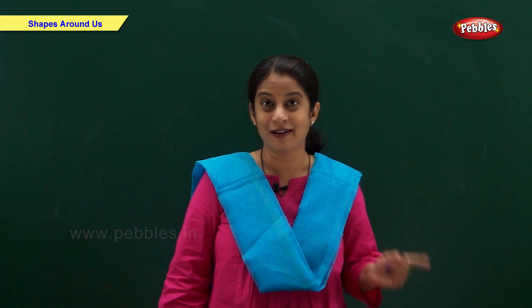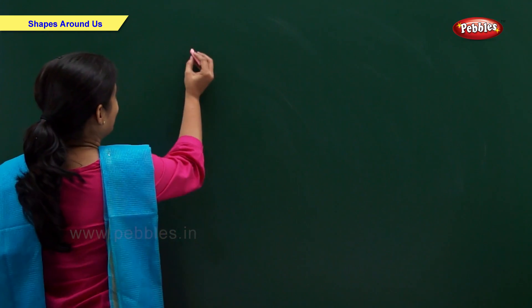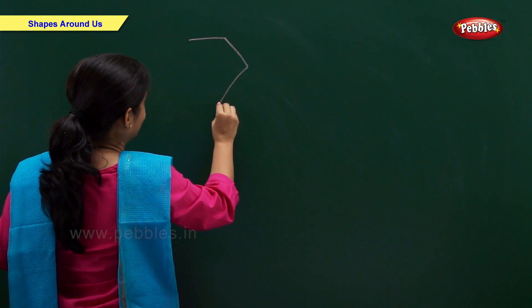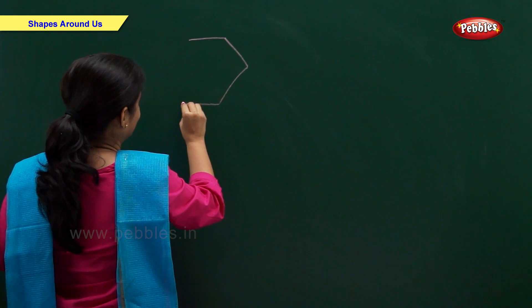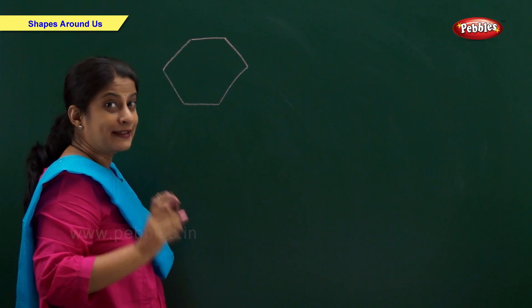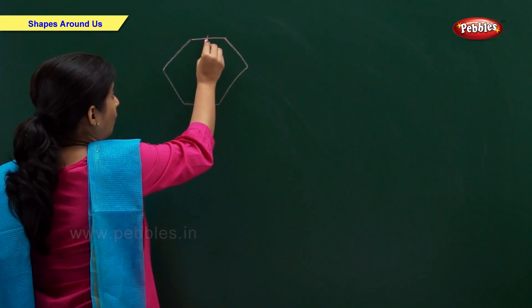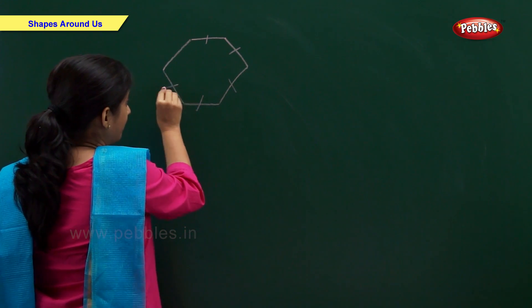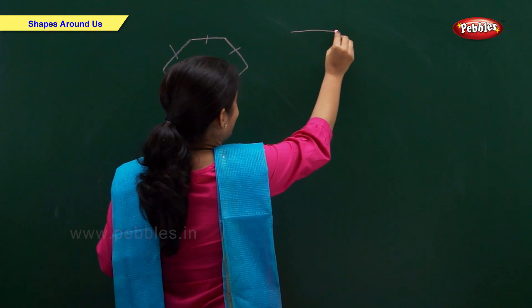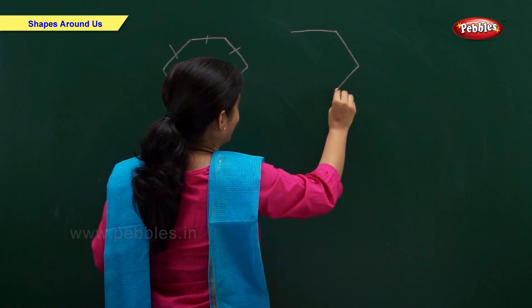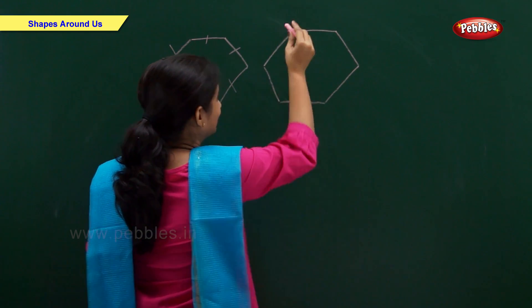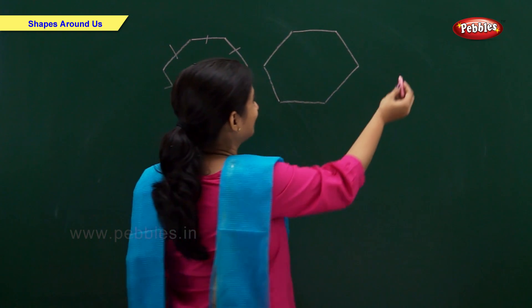Now let us draw a hexagon. A hexagon has six sides — one, two, three, four, five, six. Hexagon.